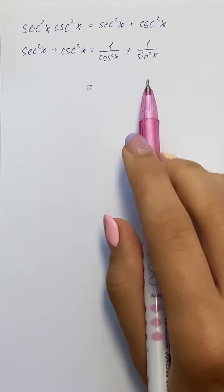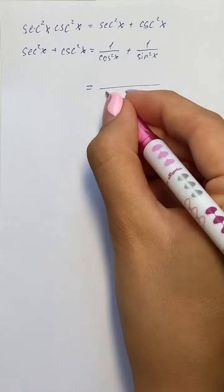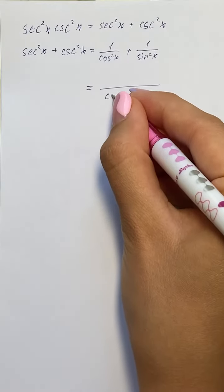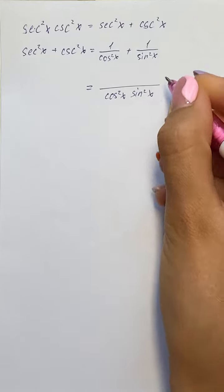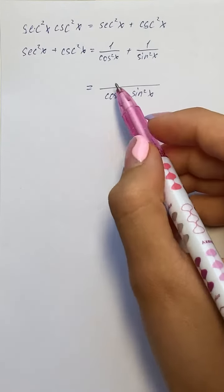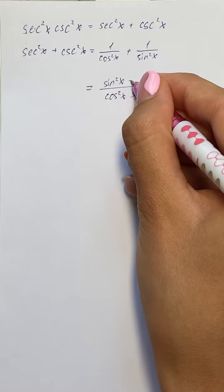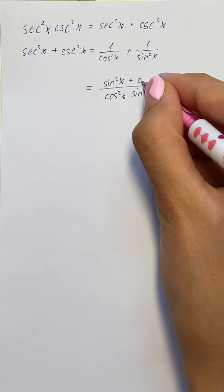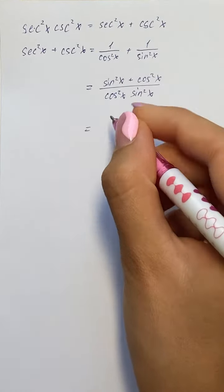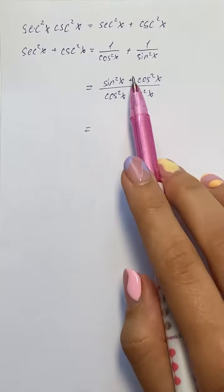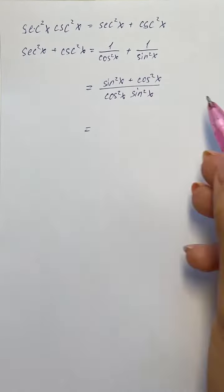Now we're going to make a common denominator, which will be cosine squared of x times sine squared of x. In the numerator we have sine squared of x plus cosine squared of x. We know that sine squared of x plus cosine squared of x equals one.